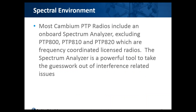So the spectral environment. We assume we've got a path up and working. Other things that affect it, especially in our unlicensed and lightly licensed products, are the things around us. We can generally assume in a licensed band, if everybody is playing nicely, that products like our PTP 800, 810, and 820 should operate interference-free if properly coordinated. In our unlicensed products, however, we need to take a look at the world as it's presented to us. The onboard spectrum analyzer available in all of our point-to-point products is a great tool to take the guesswork out.